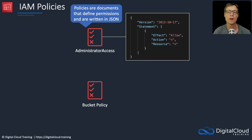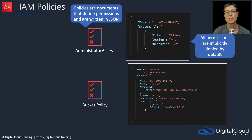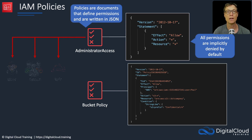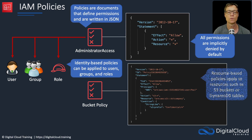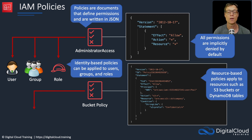All permissions are implicitly denied by default — everything is denied and you must write statements in JSON to allow access to specific actions. The identity-based policy is applied to users, groups, and roles. The resource-based policy can be applied to resources such as Amazon S3 buckets and DynamoDB tables — in this example, it's a bucket policy applied to an S3 bucket.